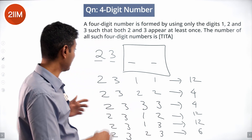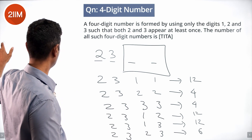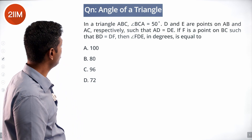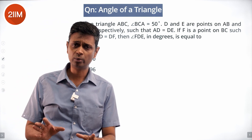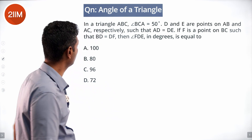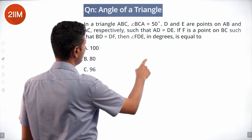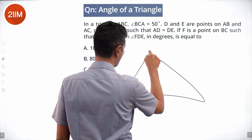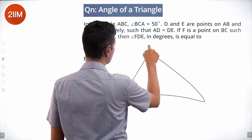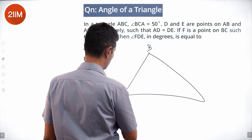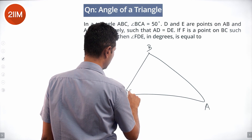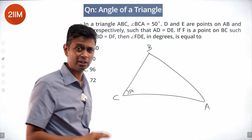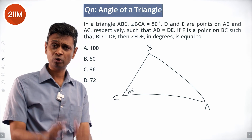The answer is 50. Beautiful question but really tricky — you have to be very careful about what you're counting. Triangle ABC: angle BCA is 50 degrees. The solving part is very simple but the diagram was a little tricky.